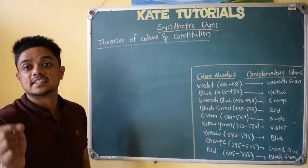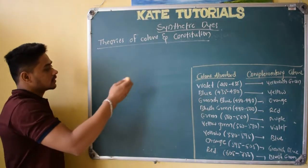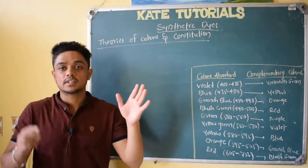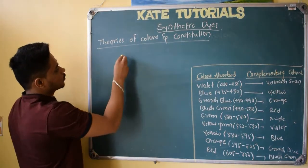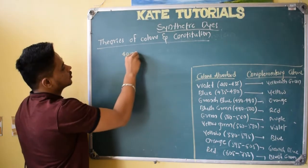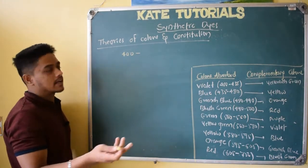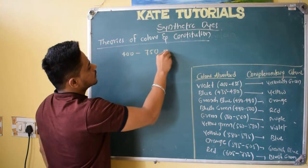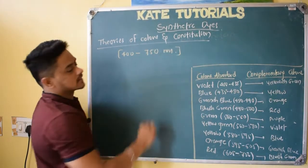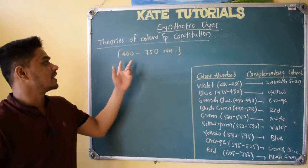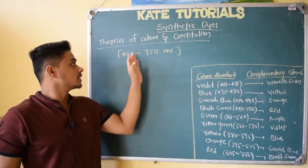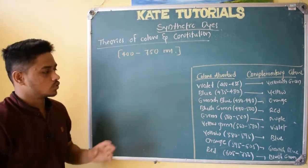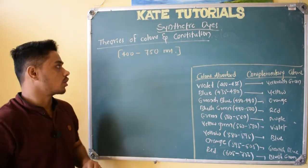Our eyes are very sensitive to the visible region. We only see those things which lie in the visible region. Like the visible region — it is from 400 to some people call 800 nanometer, but in my book they have given 750 nanometer. So I'm going to take this as the visible region. Our eyes can see only the things which get reflected by this light only. Those things outside it, we cannot see.